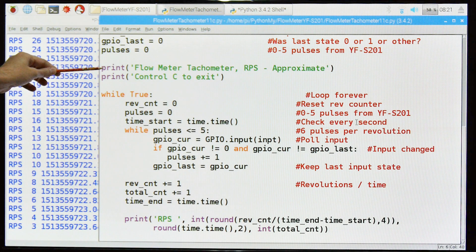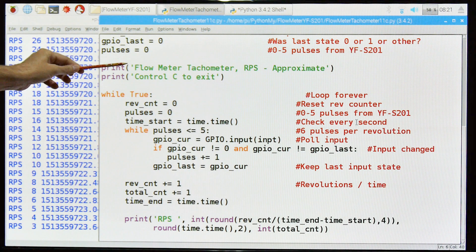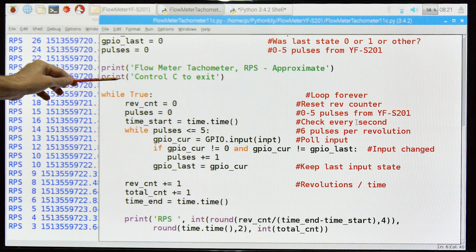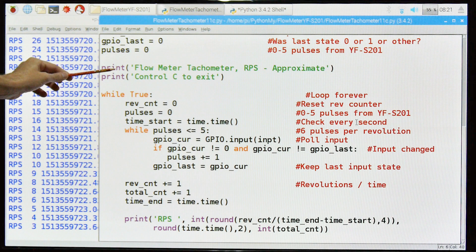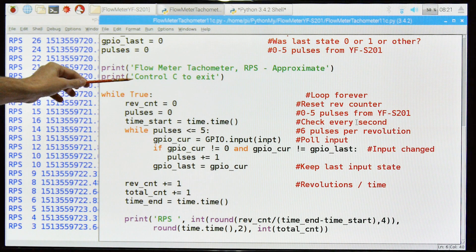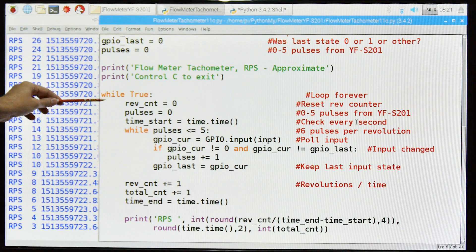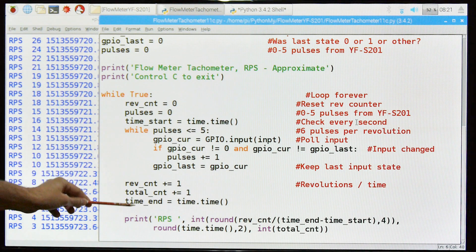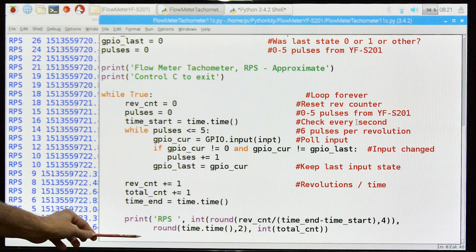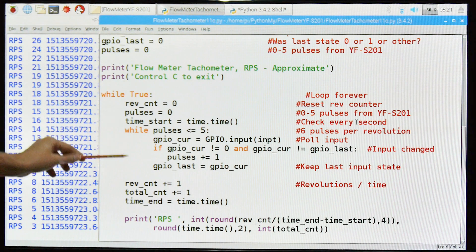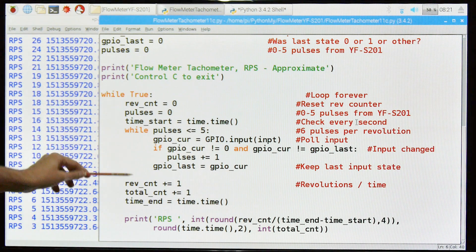Now we'll go to the active code. First we print a header that says flow meter tachometer, revolutions per second. This is approximate, you can still get false readings if it's over sped. Control C to exit. The Control C will exit but it's still not beautiful, still working on that. We've got an infinite loop that goes down to here, so we're going to keep repeating this infinite loop.